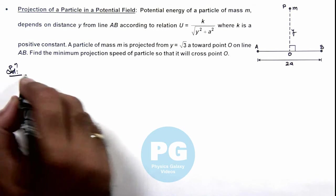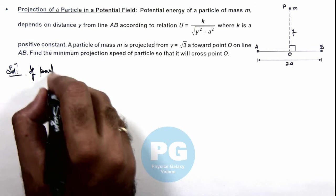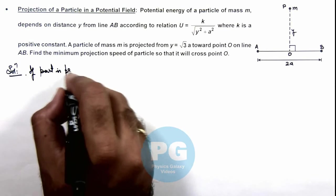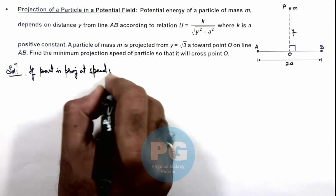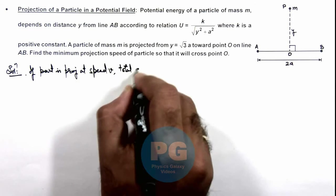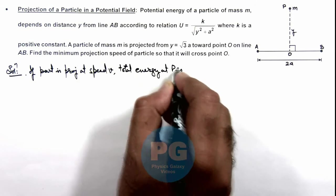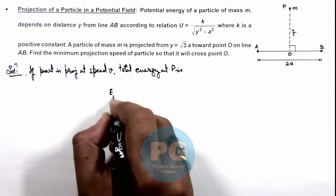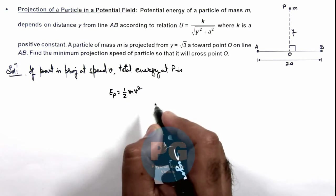Here we can see if the particle is projected at speed v, we can write its total energy at P. This E_P can be given as half m v squared, which is its kinetic energy.